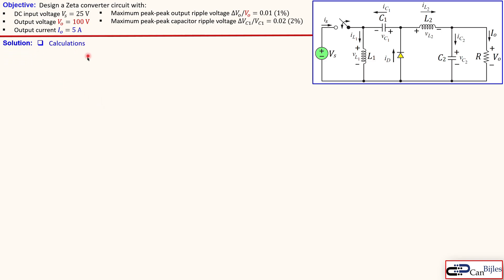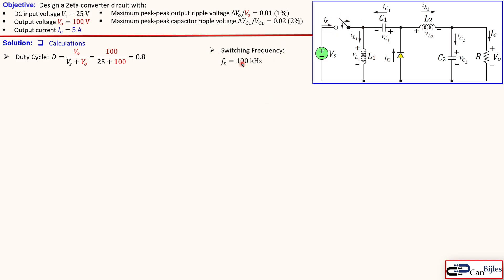Let's look at our solutions. First we start with the calculations. Since this is really similar to the Cuk converter and the SEPIC, we first determine the duty cycle using this formula. With our output and input voltage, that results in 0.8 or 80 percent duty cycle. We also need to select our switching frequency — in this case 100 kHz, which is just an arbitrary value. The load resistor R is not given, but we know the specifications: 100 volts output voltage and 5 amps output current.